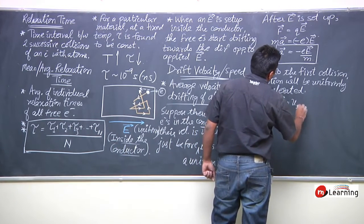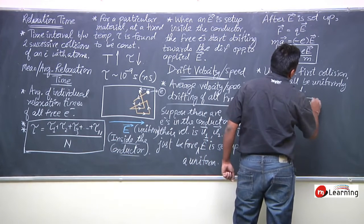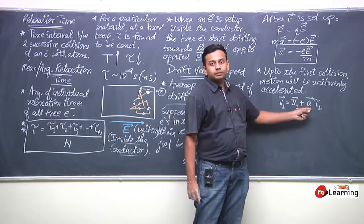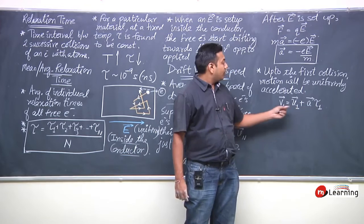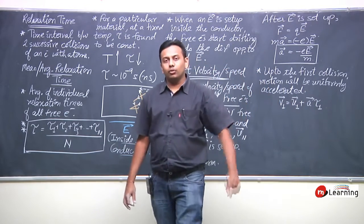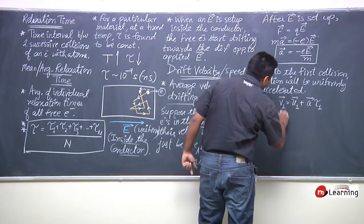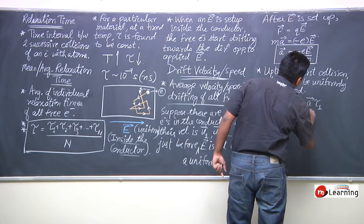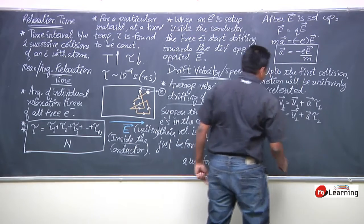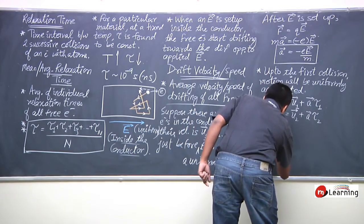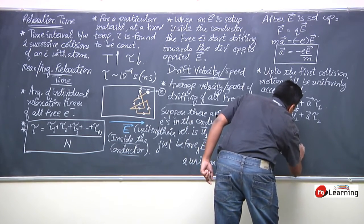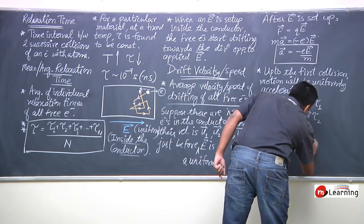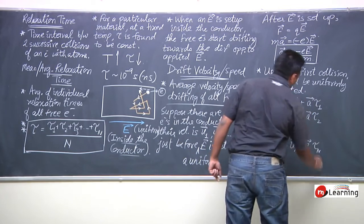By the first equation of motion: V1 = U1 + A·tau1, V2 = U2 + A·tau2, and so on up to Vn = Un + A·tau_n. The acceleration A is the same for all electrons, so only U, V, and tau differ for each electron.